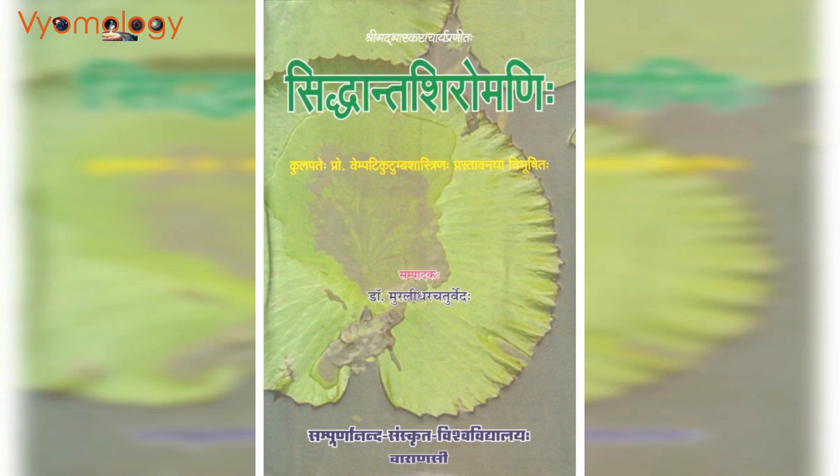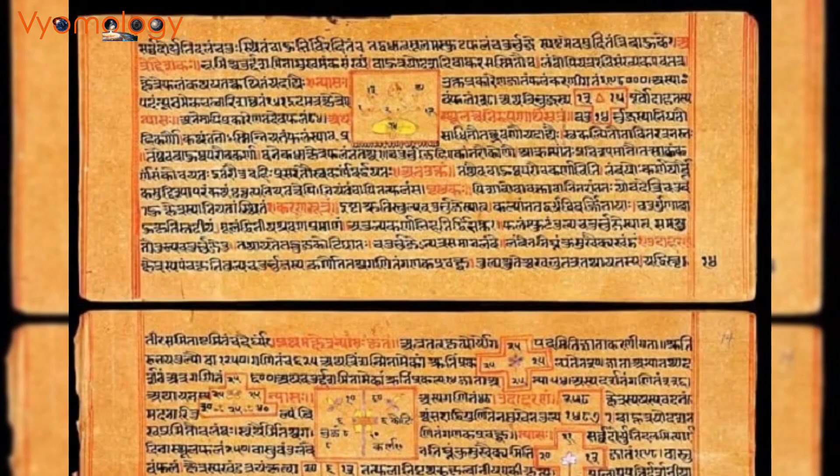Bhaskar Acharya's most famous work is the Siddhanta Shiramani, which is a comprehensive treatise on mathematics and astronomy. The Siddhanta Shiramani is divided into four parts: Leelavati, Bijganit, Grigganit, and Goladhyay.